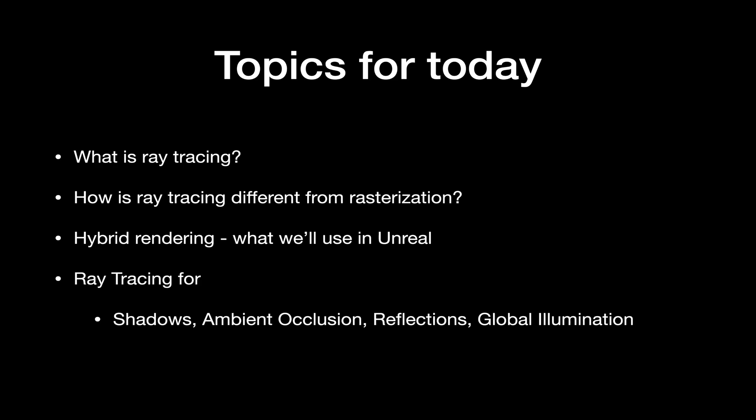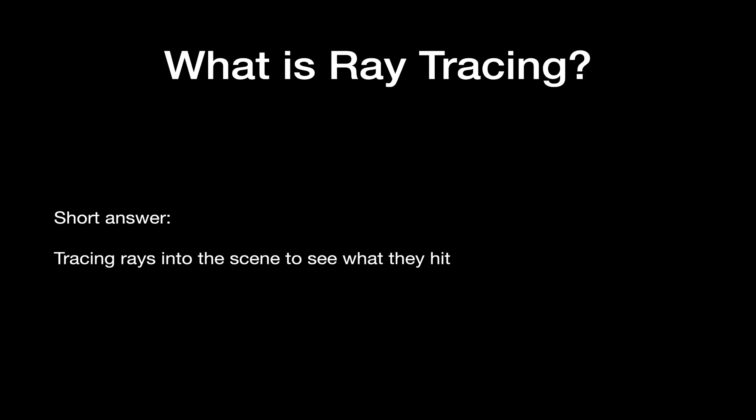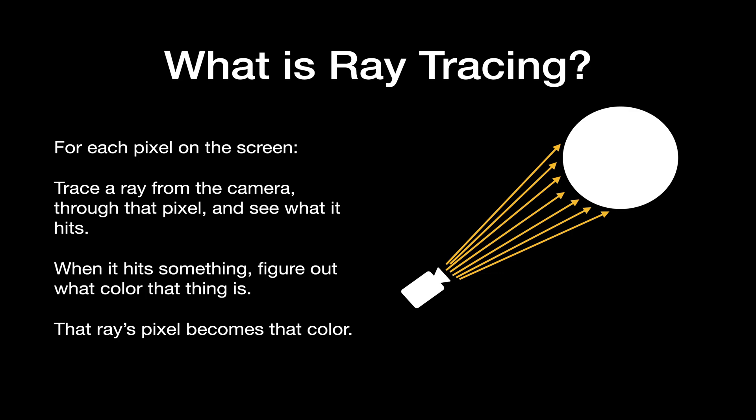Let's start out today talking about what ray tracing is. At its most basic level, ray tracing means casting rays into the scene to see what they hit. Rays are imaginary straight lines that have an origin and a direction. If the rays hit something in the scene, we can use the hit location and surface properties of the object we hit to help us shade and light the scene.